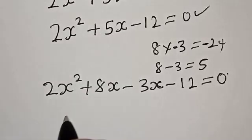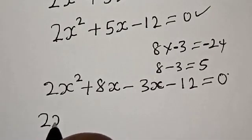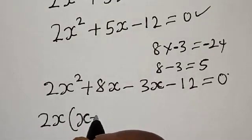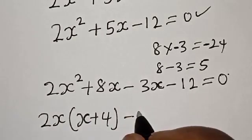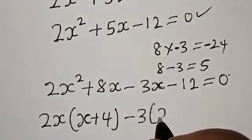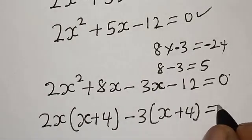Let's factor 2x out. We have 2x(x + 4) - 3(x + 4) equals 0.